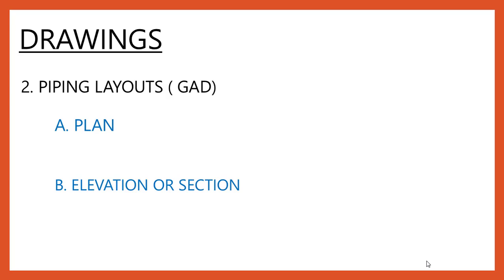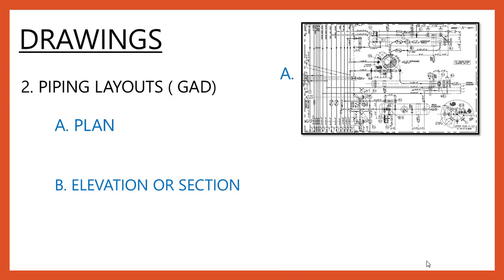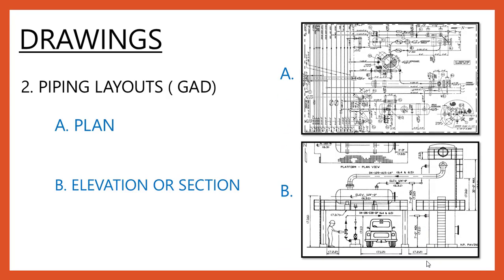The second important drawing is the piping layout. Piping layout also has two types: a plan view piping layout and an elevation or sectional view. In a plan view, you submit a drawing that appears as a plan view. In elevation and sectional drawings, you submit a drawing that shows the complete view from an elevation point of view. This is known as the piping layout.